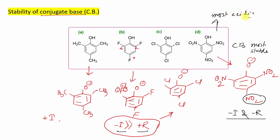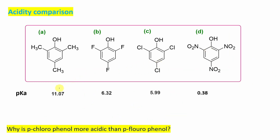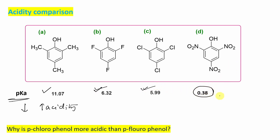So here, picric acid is maximum acidic. Let's look at some numerical pKa values. Remember: lesser the pKa, higher the acidity. 2,4,6-trimethylphenol has pKa = 11; trifluorophenol pKa = 6.32; trichlorophenol pKa = 5.99; and picric acid pKa = 0.38 — far more acidic. Even acetic acid has a pKa of 4.74, so picric acid is far more acidic than acetic acid. That is why 2,4,6-trinitrophenol is called picric acid — its behavior is not like phenol but like a strong acid.